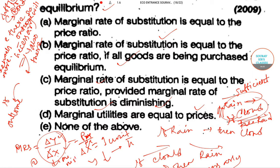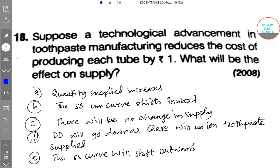MRS equal to the price ratio is the first condition, and the second condition is that it must be diminishing. As you consume more x, you continuously sacrifice y to maintain the same utility level. So the option with MRS equal to price ratio with diminishing MRS is the correct option.